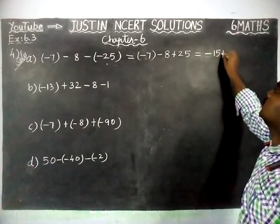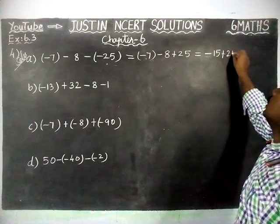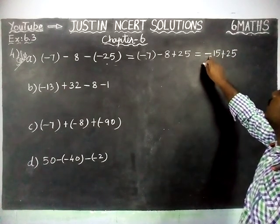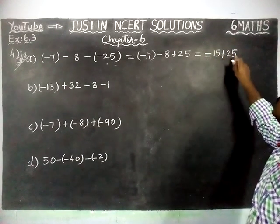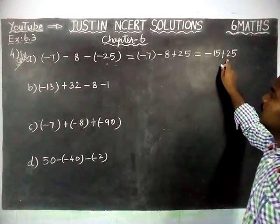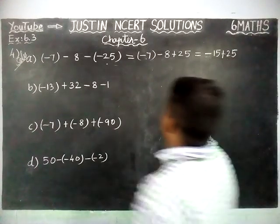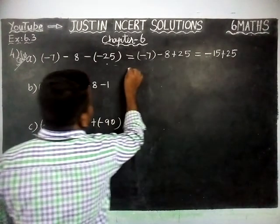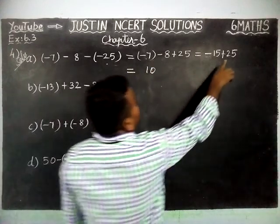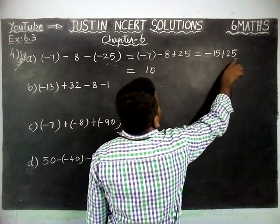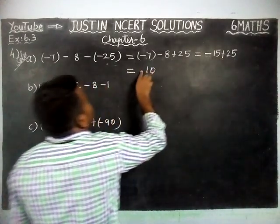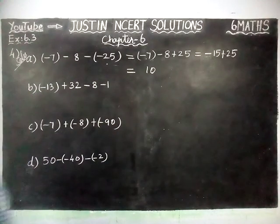Now plus 25. So we have minus 15 plus 25. Signs are different, so we find the difference, which is 10. The greatest number is 25, and the sign in front of the greatest number is plus. So plus 10 is the correct answer.